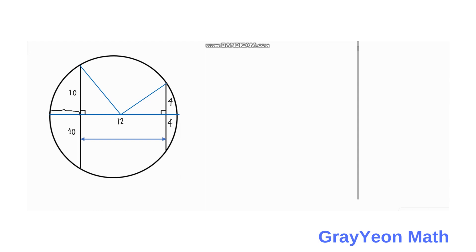First thing that we have to do is we need to label the distance near the 20-unit chord as X, and label the distance near the 8-unit chord as Y.